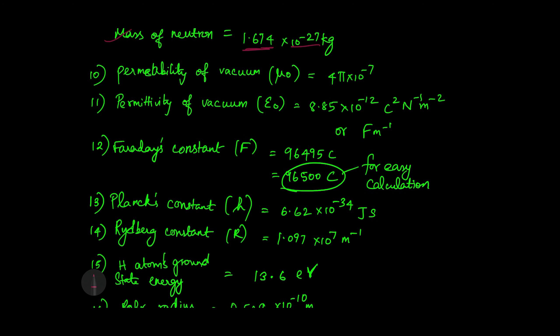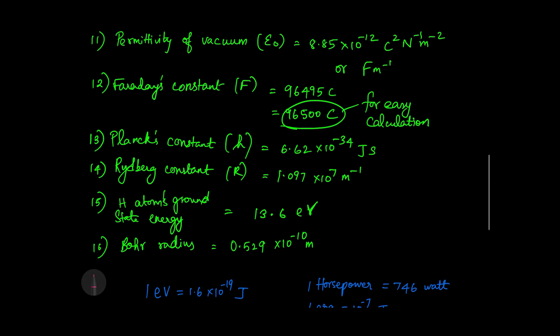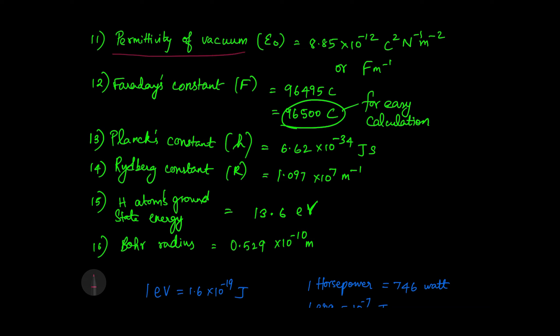Mass of proton and neutron is 1.672 × 10 power minus 27 kg. Permeability of vacuum is represented by μ₀: 4π × 10 power minus 7. Permittivity of vacuum, epsilon naught ε₀, is 8.85 × 10 power minus 12 coulomb square newton minus 1 meter minus 2, or farad per meter.